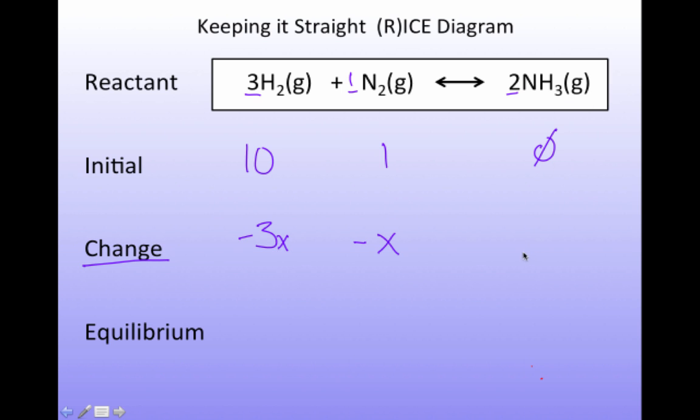And for every ammonia, or for every nitrogen that reacts, I get 2 ammonia. And so it's going to be plus 2x for the ammonia. So then I can imagine what will I have if x amount reacts at equilibrium. So I can just add these two lines together, my initial plus the change. And at equilibrium, I'm going to have 10 moles minus 3x moles. And I'm going to have 1 mole minus x. And then here I'm going to have plus 2x.